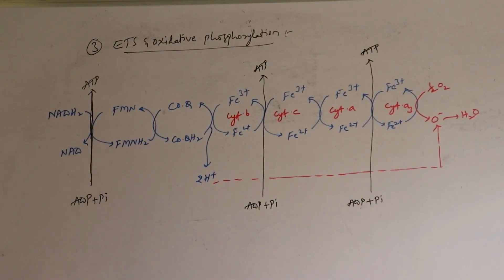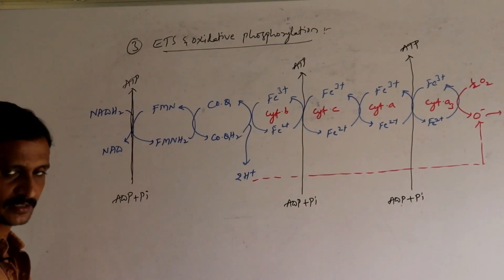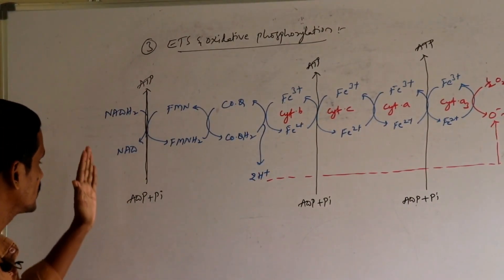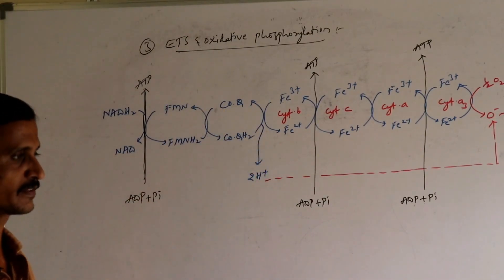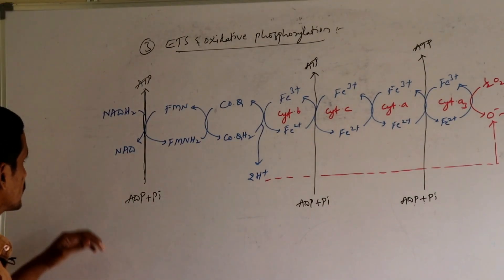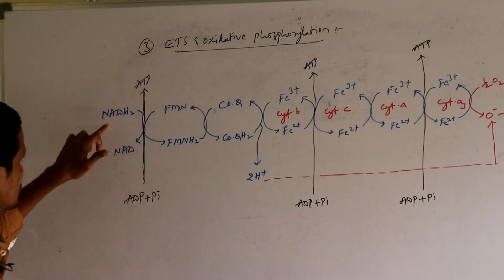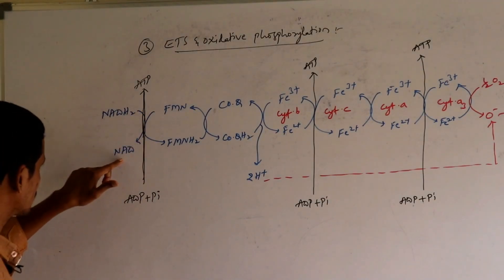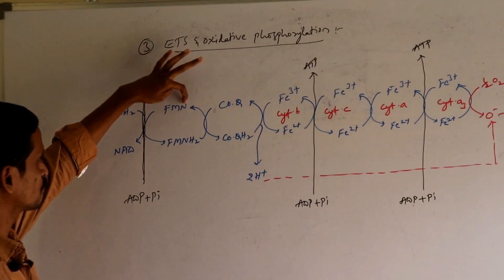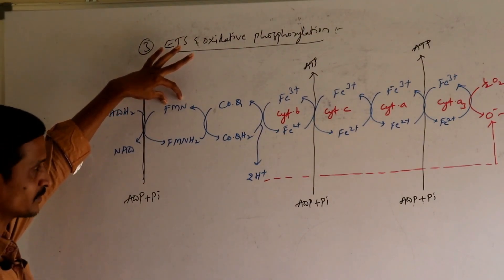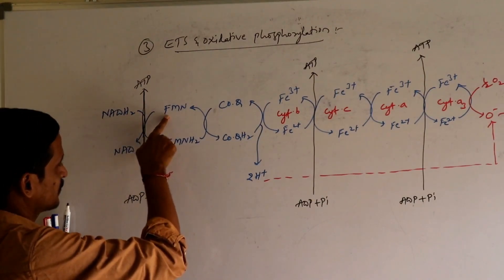As mentioned earlier, NADH2 is a bigger energy-rich substance compared with ATP. It needs to be converted into ATP so that ATP can be hydrolyzed and that energy utilized for various biological activities. NADH2 is oxidized to form NAD — meaning H2 is removed. This H2 is then accepted by flavin mononucleotide, another flavo protein.